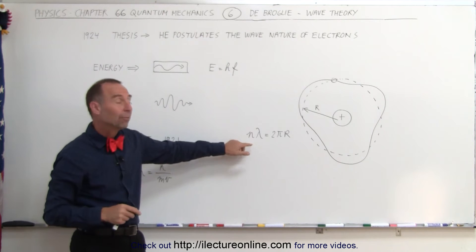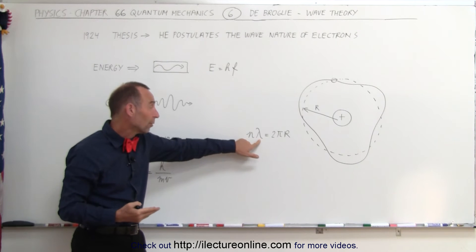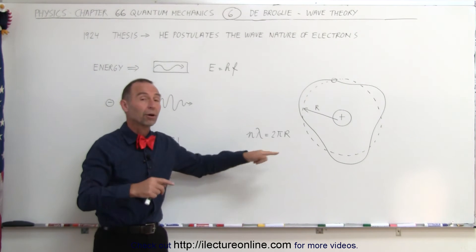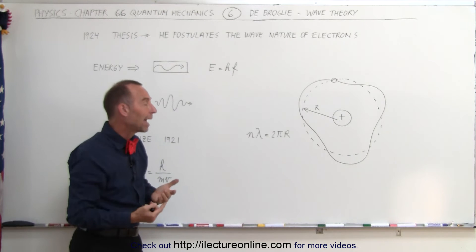So the equation then became that n, the energy state, times the wavelength equals 2πr, which was, of course, the circumference of the path of the electron.